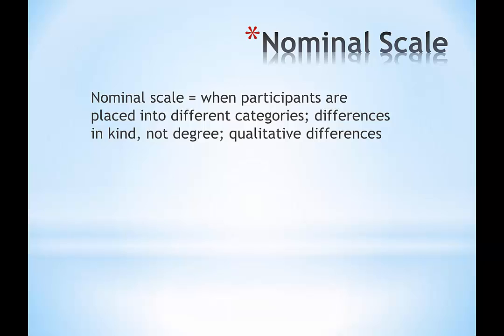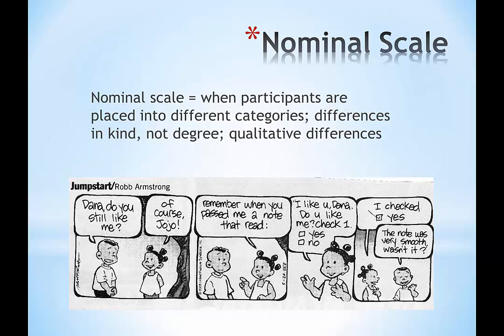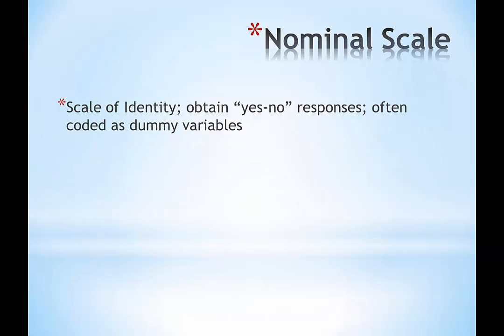When we have nominal scale data, that means participants have been placed in different categories. There are differences in kind, not degree or magnitude — we refer to these as qualitative differences. Nominal scale talks about classifications and categories. If we check a box of yes or no, sometimes they're coded as dummy variables, which means the numbers are meaningless. I could code yeses as ones and nos as twos — the numbers really don't matter. They're just helping me keep track.